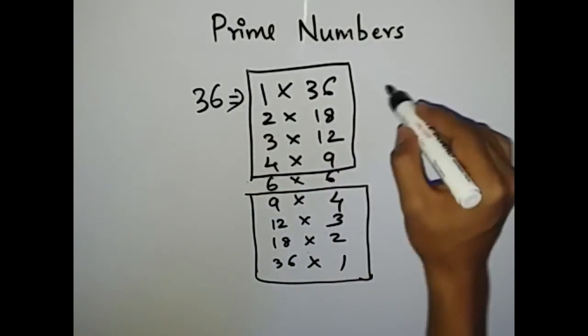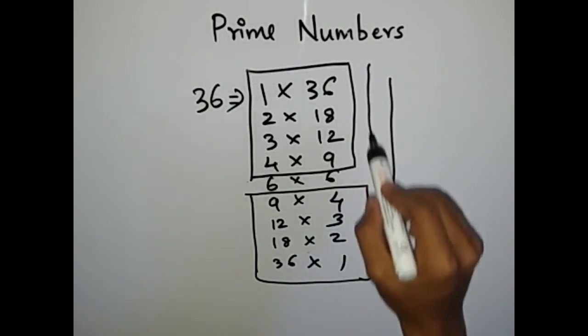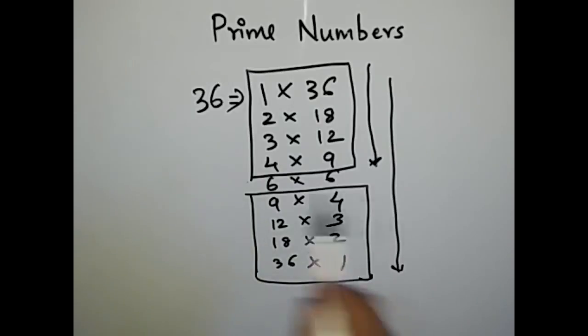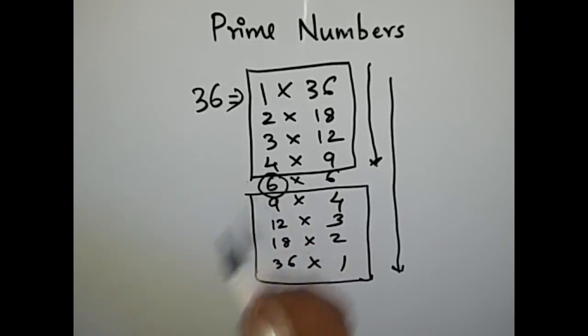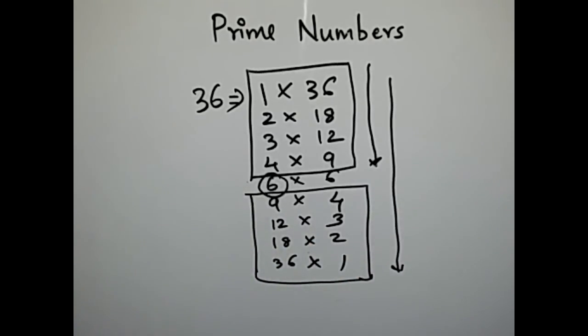So what we do is, in our previous logic we are ranging from 2 and traversing all the way through n-1. So what we will do is only travel up to this, so we will get all the factors and we will stop looping here. This is a number 6 where we should stop looping.